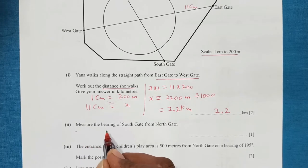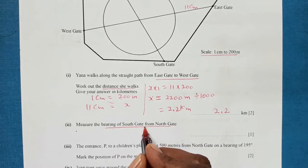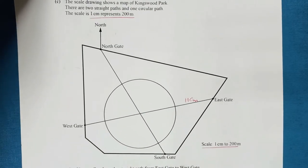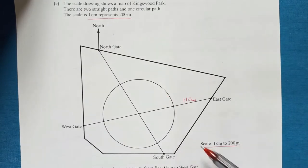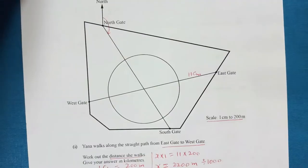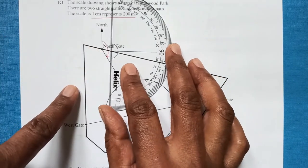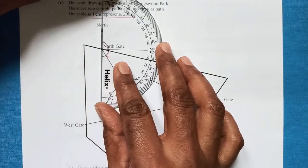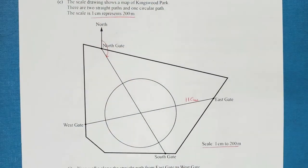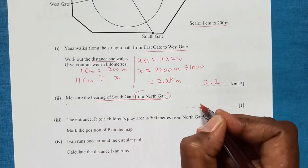Part 2: Measure the bearing of South Gate from North Gate. For bearings, always measure from north. We go to the north of North Gate, then measure the angle to South Gate using a protractor. Placing it on the central point aligned with the north arrow, this angle is approximately 150 degrees. So the bearing of South Gate from North Gate is 150 degrees.